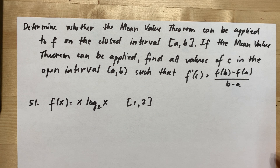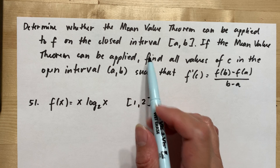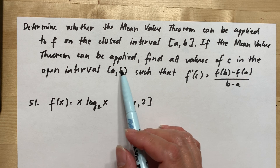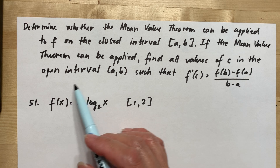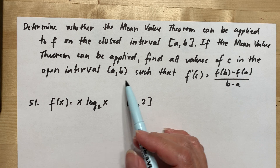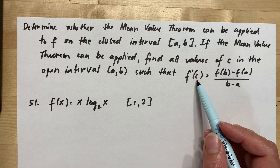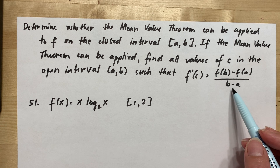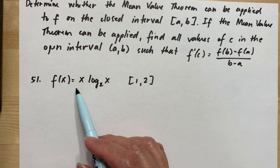Determine whether the Mean Value Theorem can be applied to the function on the closed interval from A to B. If the Mean Value Theorem can be applied, find all values of C in the open interval A to B such that the derivative at point C is equal to F(B) minus F(A) over B minus A.